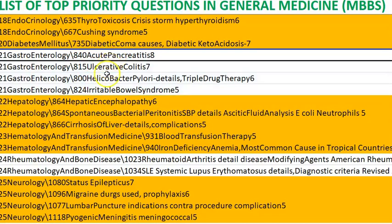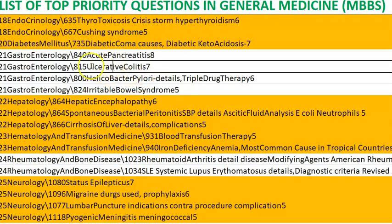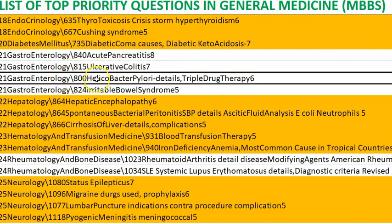In gastroenterology, acute pancreatitis is important — it can lead to acidosis; know how to manage it and when to give antibiotics. Ulcerative colitis: know the difference between this and Crohn's. Ulcerative colitis is more manageable because it is continuous and superficial only.